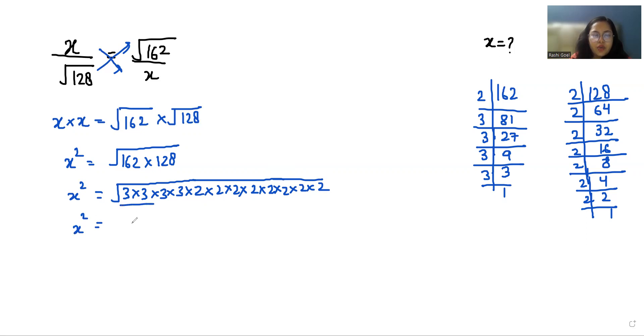Now it is square root so we can write the pair, make a pair and take it outside. Now if this square root goes to the other side, square goes to the other side, convert it to square root.